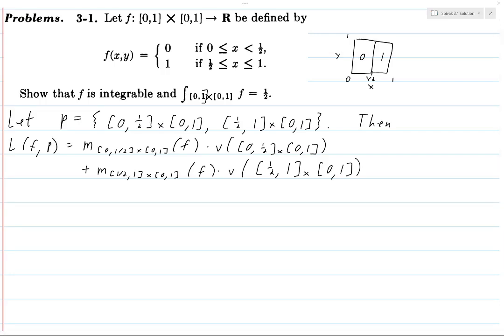is the infimum of f over that rectangle. So on the rectangle [0,1/2] × [0,1], the function is always zero, so the infimum is going to be zero. So we get zero times - and then the volume of that rectangle is going to be one half, like we talked about.